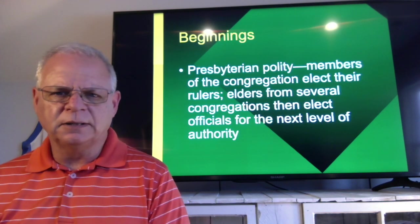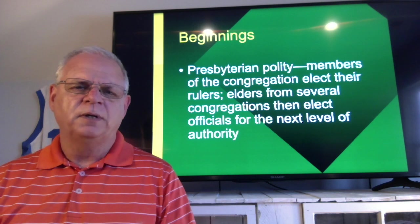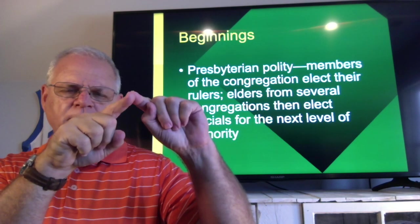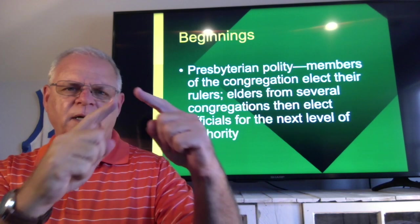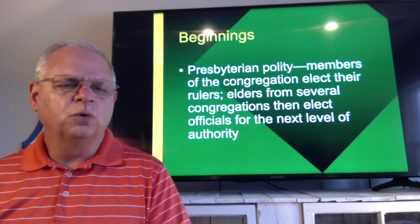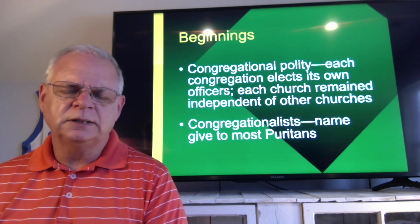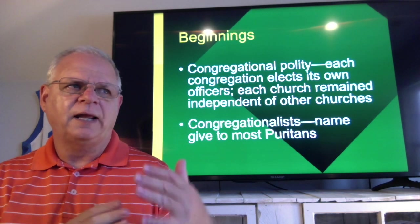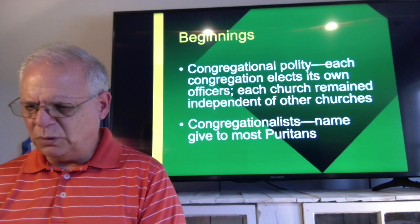Then there's Presbyterian polity: members of the congregation elect their rulers, and elders from several congregations elect the officials for the next level up — working from the bottom up to leadership. The people have a voice but are still part of a denomination following the same authority. Then there is congregational polity: each congregation elects its own officers and each church remains independent of other churches. Eventually, this congregational polity described most Puritans, and they became known as Congregationalists.